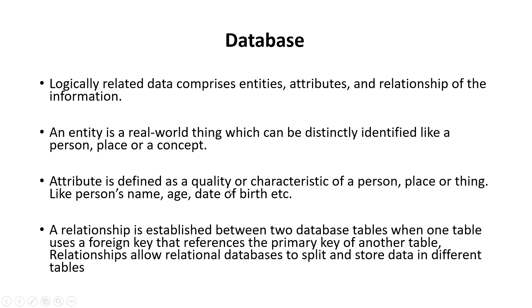An attribute is defined as a quality or a characteristic of a person or thing, like a person's name, age, date of birth, or a place's name. So an entity is a person or place, and an attribute is a quality like a person's name, age or date of birth.